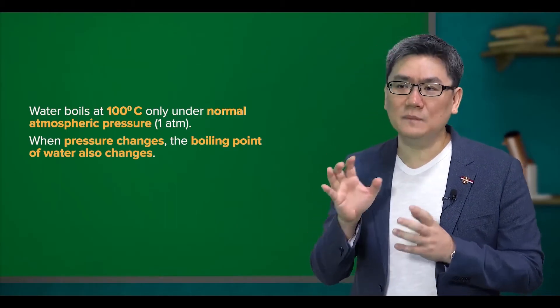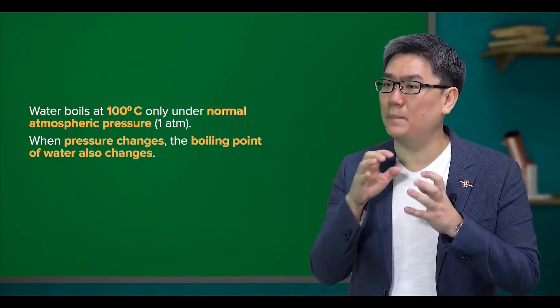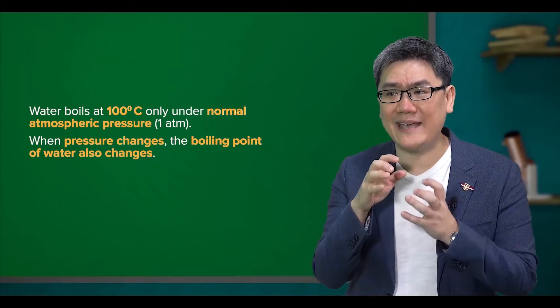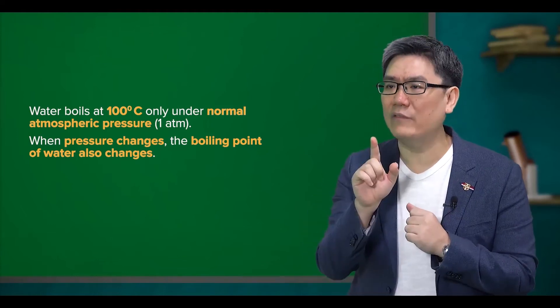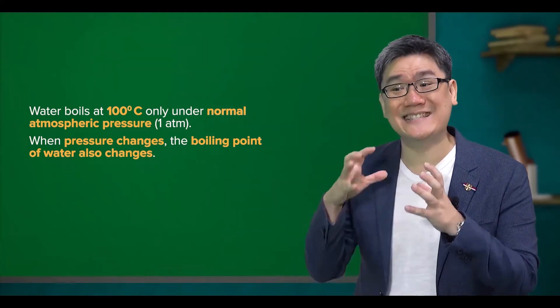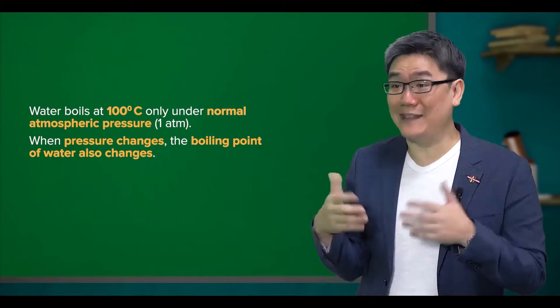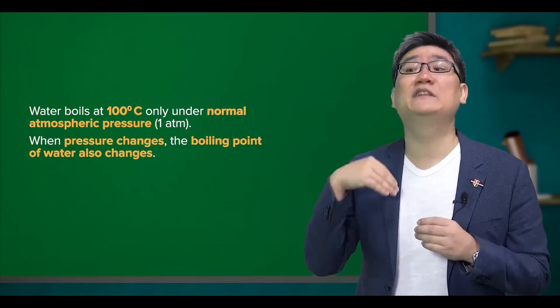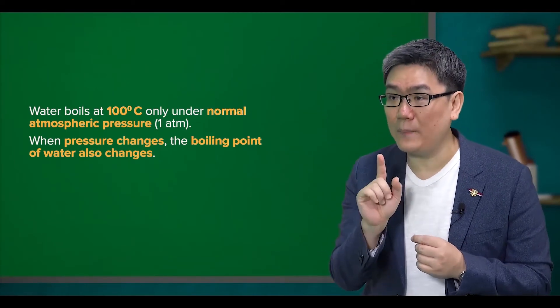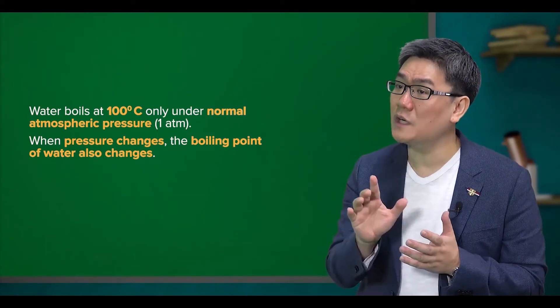You see, the increase in temperature inside the pressure cooker causes the gases trapped inside to expand. However, as the pressure cooker is sealed, the gas is unable to expand freely. Thus, pressure increases and the boiling point of water in the pressure cooker increases as well.